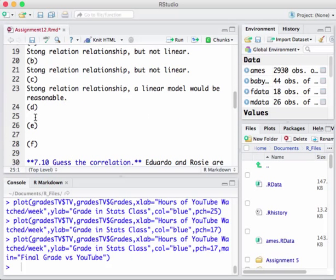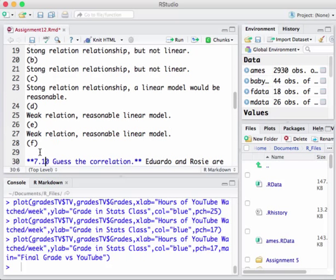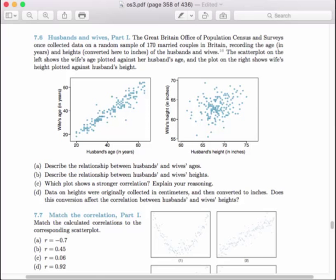Let's come back over to our RStudio here. And let's go ahead and finish typing that up. We're going to have weak relation, reasonable to do a linear. So reasonable for a linear model. I'm just going to copy that because that's the exact same answer that I've got for Part E. And then Part F, we'll say it's moderate instead.